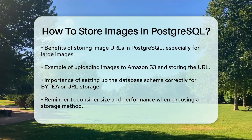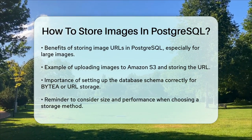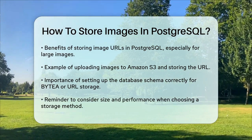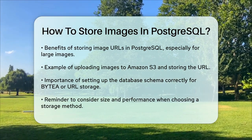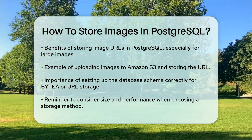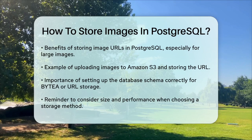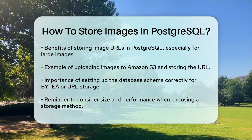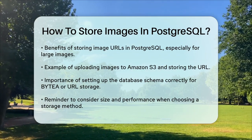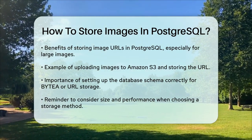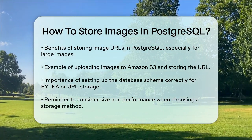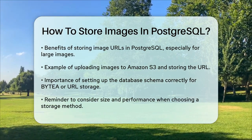In both cases, you need to ensure that your database schema is set up correctly. If you're using ByteA, your column should be of the ByteA data type. If you're storing URLs, your column should be of a text data type. So whether you choose to store images directly as binary data or as URLs to external storage, PostgreSQL provides the flexibility to handle your image storage needs efficiently. Just remember to consider the size and performance implications of each method when deciding which approach is best for your application.